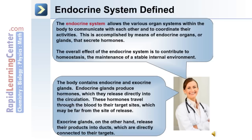The body contains both endocrine and exocrine glands. Endocrine glands produce hormones which they release directly into the blood circulation. These hormones travel through the blood to their target sites. Exocrine glands, on the other hand, release their products into ducts, which are directly connected to their targets.